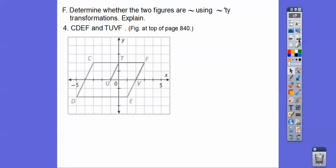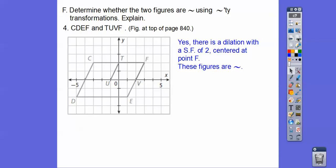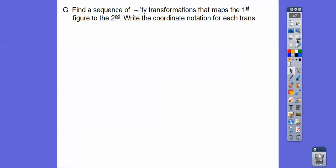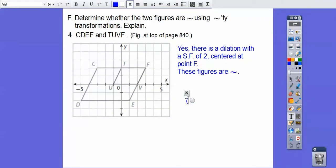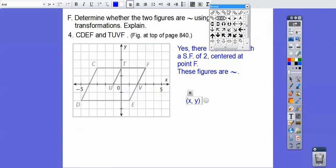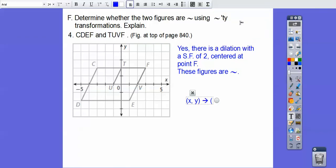For this pair of parallelograms, they look similar. Counting lengths: the small one is 3 units, the large one is 6 units — a scale factor of 2 to 1. Checking the slope: the small goes up 2 over 1, and the large goes up 4 over 2 — the same ratio. So these are definitely similar with a scale factor of 2 going from small to large, or one half going from large to small.